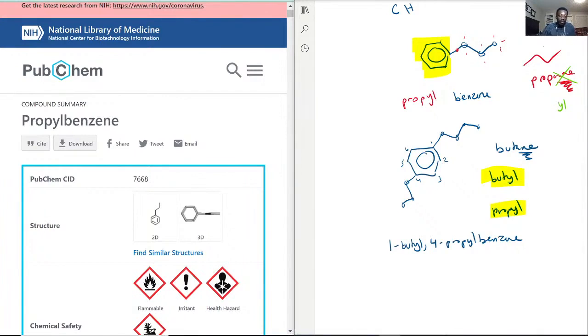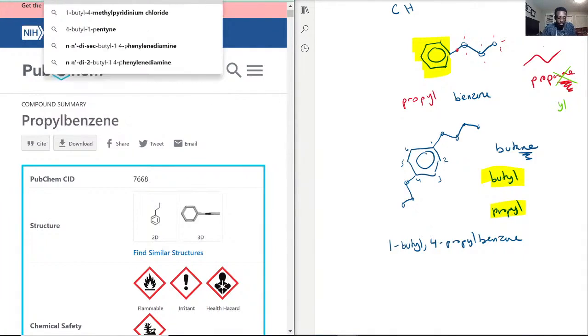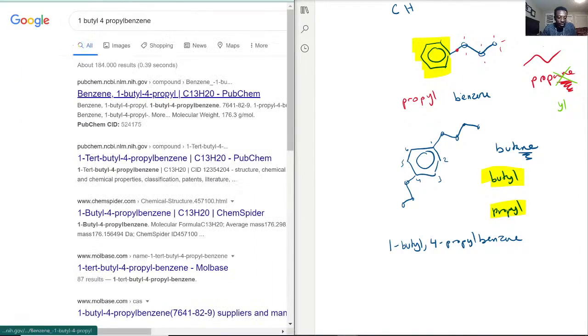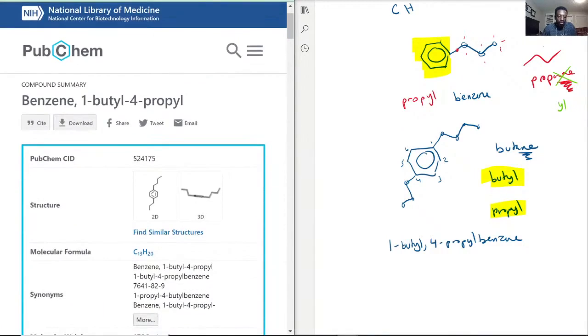Let's see if we are correct. I don't want isobutyl because that's a little bit of a different one. One butyl, yep there we go, has the longer part on top and then the shorter part on the bottom, but exactly one butyl, four propyl benzene.